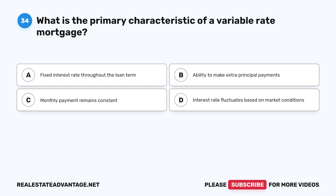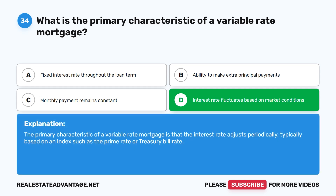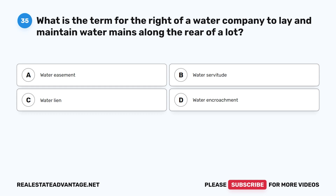Question 34: What is the primary characteristic of a variable-rate mortgage? A. Fixed interest rate throughout the loan term. B. Ability to make extra principal payments. C. Monthly payment remains constant. D. Interest rate fluctuates based on market conditions. The correct answer is D. The primary characteristic of a variable-rate mortgage is that the interest rate adjusts periodically, typically based on an index such as the prime rate or treasury bill rate.